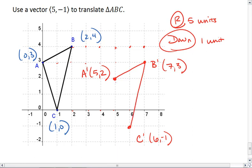And that gives me triangle A prime, B prime, C prime, which is the image of triangle ABC.